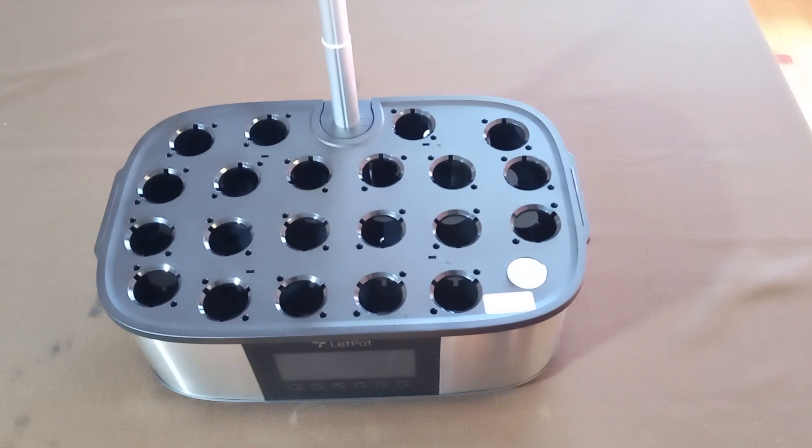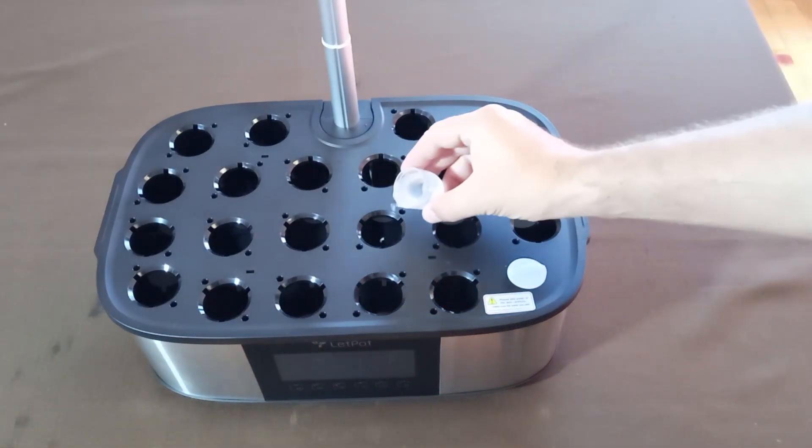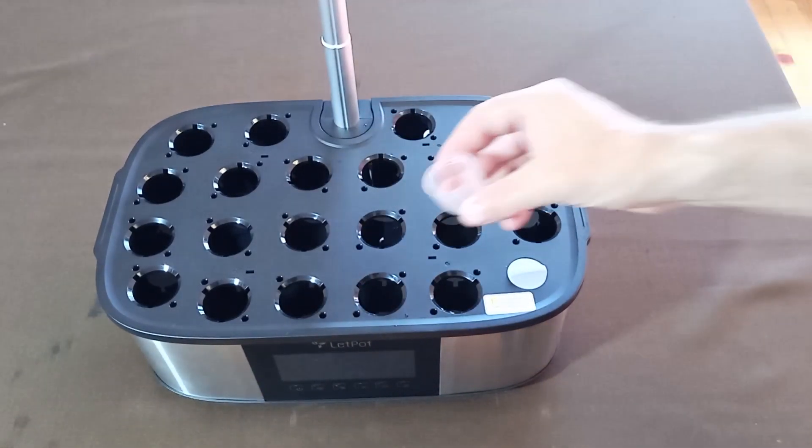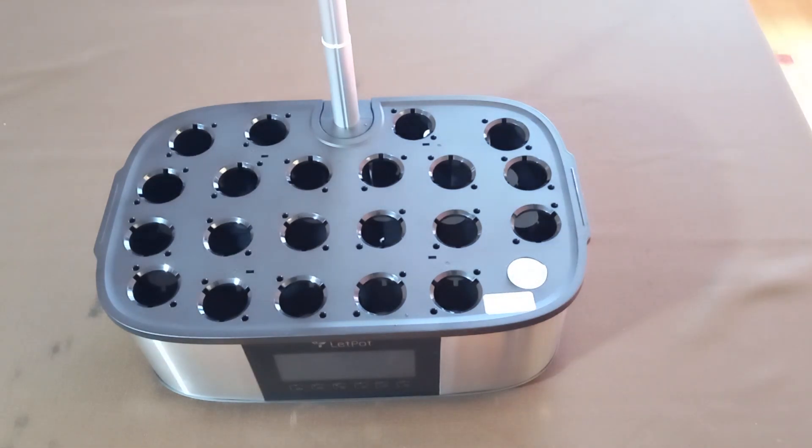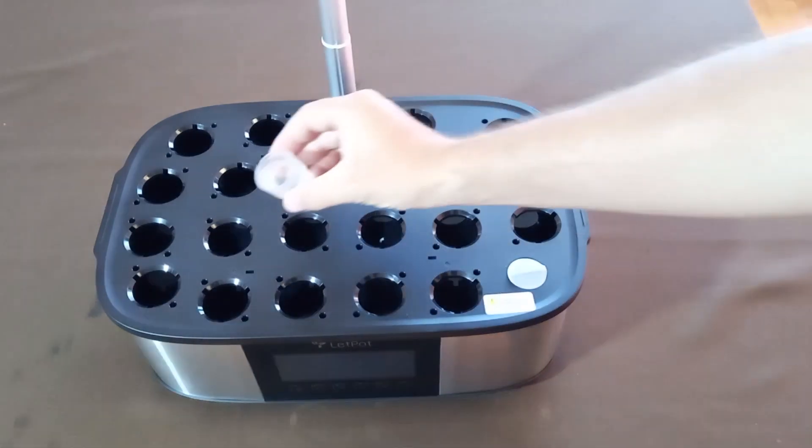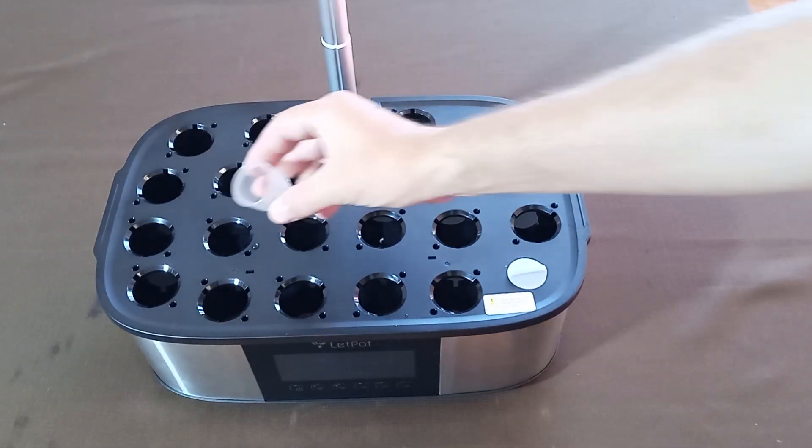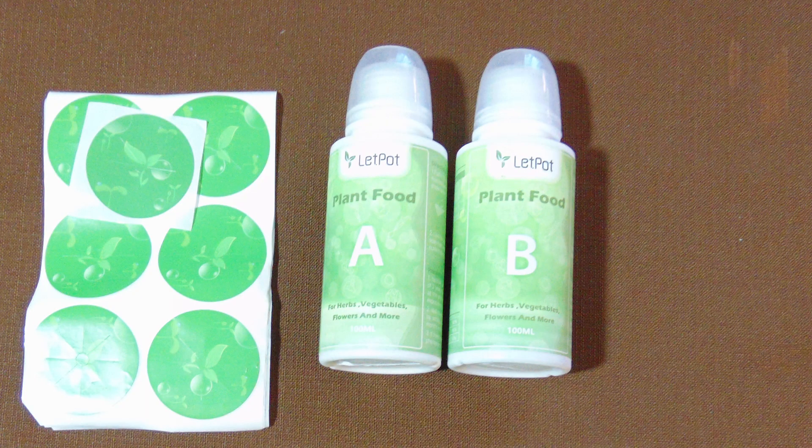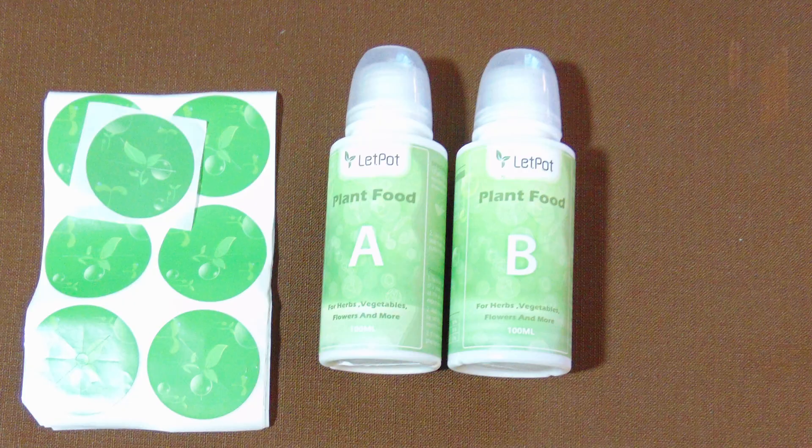Step 3. Add plant food. As the plant food is in solid form, it needs to be diluted in water before use. Fill each bottle almost to the top with water and give it a gentle shake. Allow the bottles to sit for a few minutes, and then shake them again until the solid granules are completely dissolved. Next, add 35 milliliters of plant food from both bottles A and B. Mix the plant food and water thoroughly in a bowl.